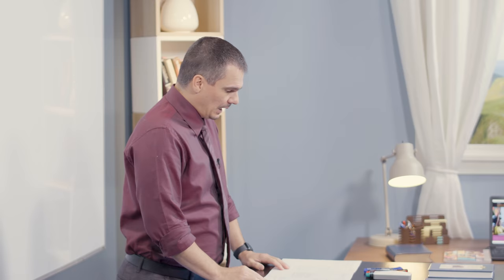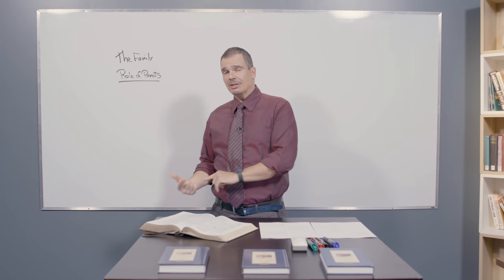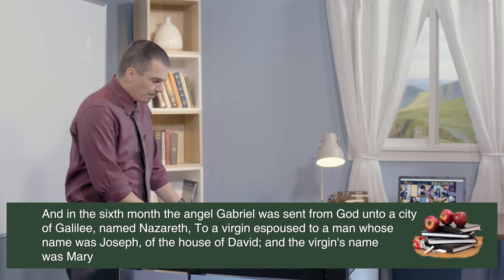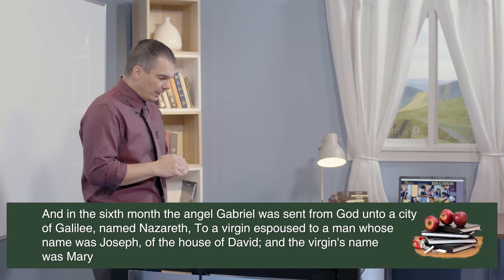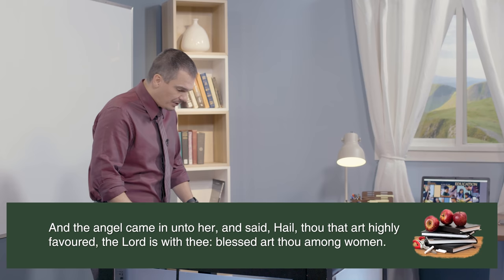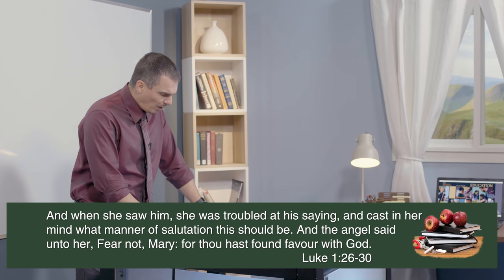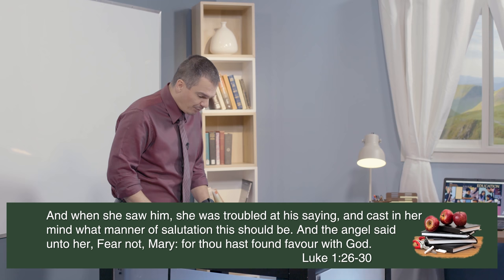Now, in Luke 1, verse 26 to 30, we're going to discover a little bit about the character of Mary. And then we're going to look a little bit about the character of Joseph. It says in verse 26, In the sixth month, the angel Gabriel was sent from God unto a city of Galilee named Nazareth, to a virgin espoused to a man whose name was Joseph of the house of David. And the virgin's name was Mary. And the angel came in unto her and said, Hail thou art highly favored, the Lord is with thee. Blessed art thou among women. And when she saw him, she was troubled at his saying, and cast in her mind what manner of salutation this should be. And the angel said unto her, Fear not, Mary, for thou hast found favor with God.